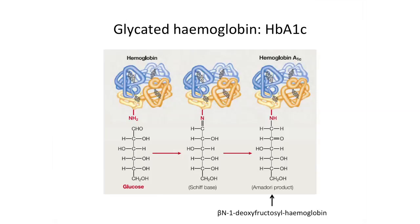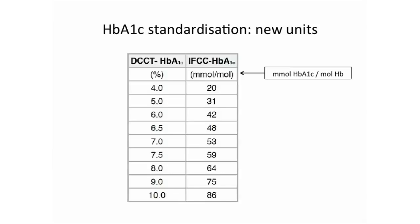Looking through the chapter on glycemic control, you'll notice HbA1c is reported both as a percentage and in a new unit called millimoles per mole — referring to millimoles HbA1c per mole of hemoglobin. A lot of literature reports both percentage and the IFCC unit of millimoles per mole. This new reporting structure was introduced since 2010, and many local labs are also now reporting in these two units.